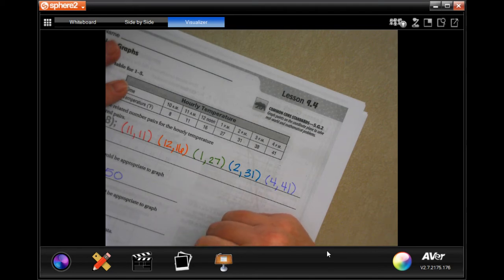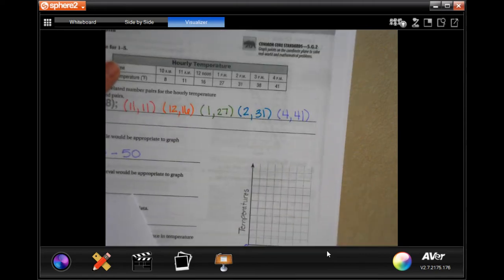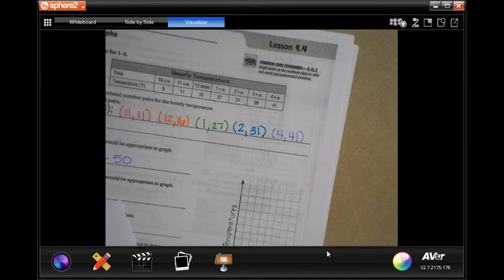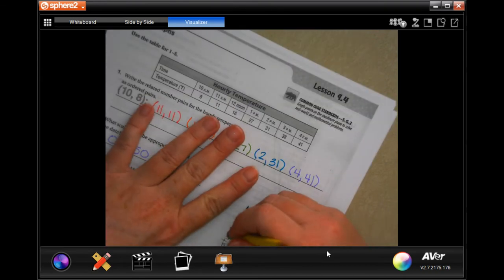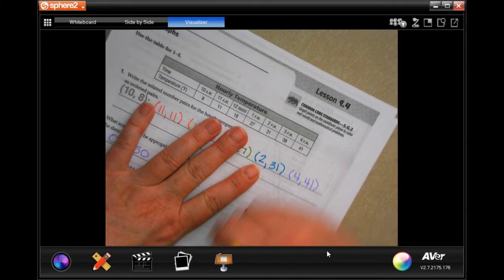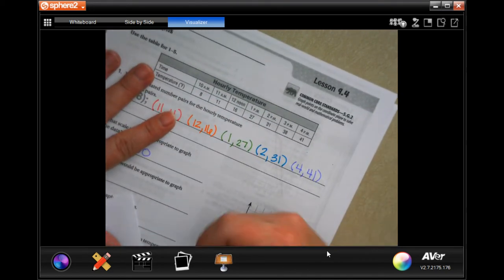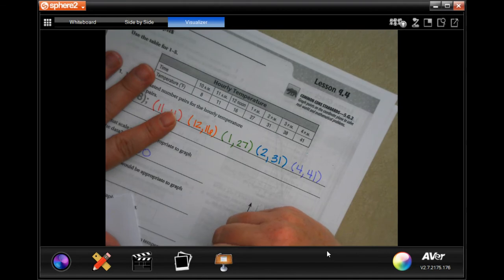So we would be putting the hours down here on the x-axis, and over here would be the temperatures. You know what, I'm going to grab my hand, I'm going to move it back just a little bit. I'm going to write the same words, but I'm just going to move it back a little bit so that I can put my numbers in without squishing.